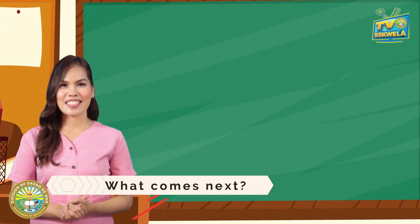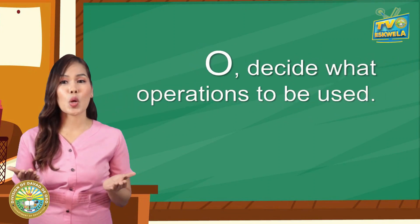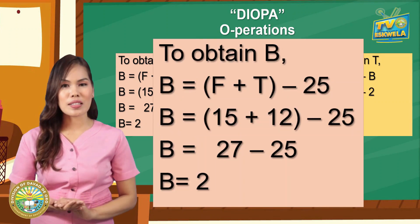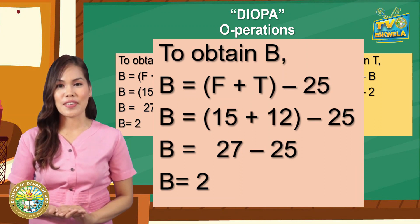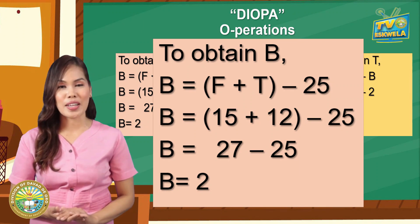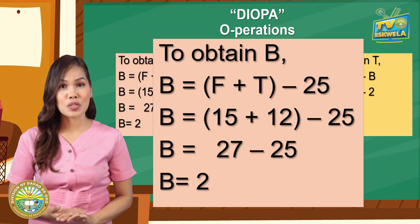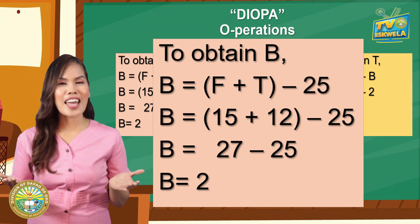After the I, what comes next? It's O. O means operations — decide what operations to be used. To obtain B: B equals the quantity of F plus T minus 25, which is the total number of high school students. B equals 15 plus 12 minus 25 by substitution. B equals 27 minus 25 by simplifying. Then B equals 2.